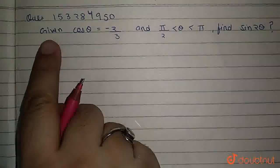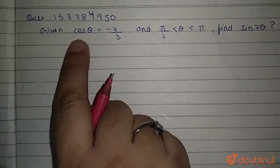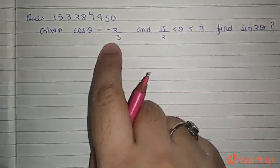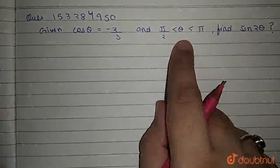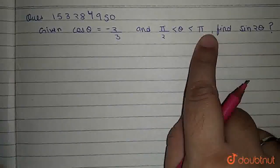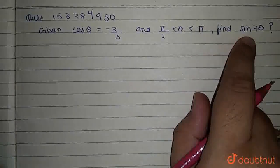Hello everyone, our question is: given cos θ = -2/3 and π/2 < θ < π, find the value of sin 2θ.